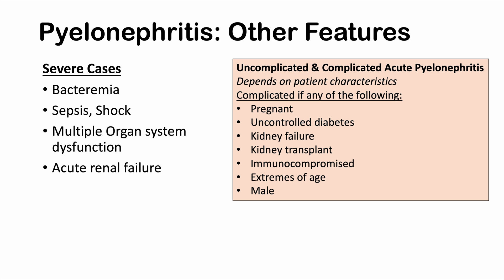It's important to distinguish uncomplicated from complicated acute pyelonephritis, as this often determines management. A case is considered complicated if the patient is pregnant, has uncontrolled diabetes, kidney failure, is a kidney transplant recipient, is immunocompromised, is at extremes of age — very young or very old — or is male.